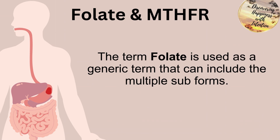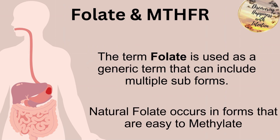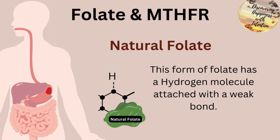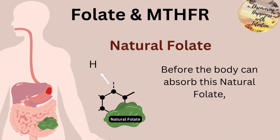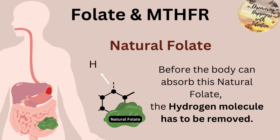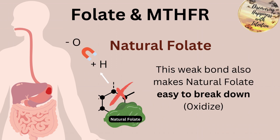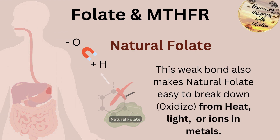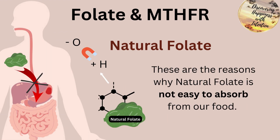The term folate is actually used as a generic term that can include all of its multiple sub-forms. Natural folate occurs in a form that is easy to methylate, with a hydrogen molecule attached via a very weak bond. Before the body can absorb this natural version of folate, this hydrogen molecule has to be removed so that it can cross the membrane into the digestive system. This weak bond also makes natural folate very easy to break down or oxidize from light or from ions in metals, which is why natural folate is not easy to absorb from our food.